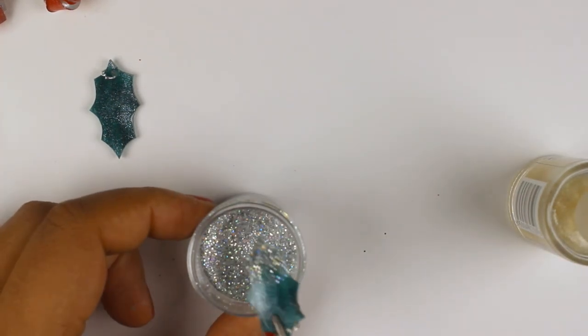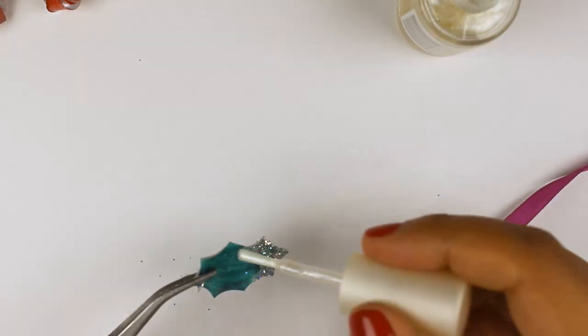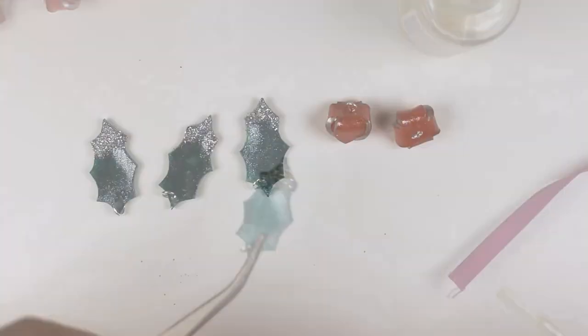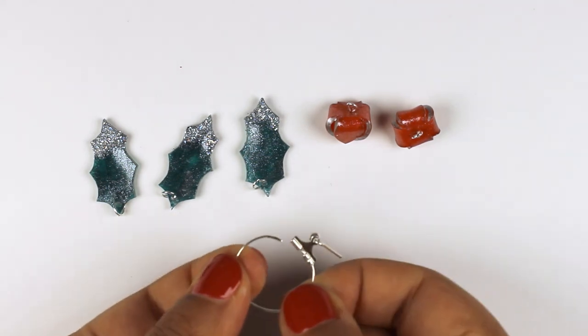I'm dipping the tips of the leaves into my glitter, and when it's thoroughly dry I layer it up again with the clear nail varnish to seal the glitter in.